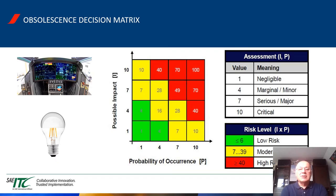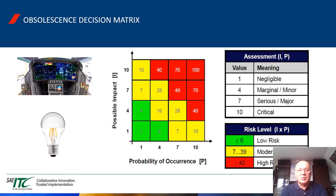In our discussions in Airing 662, we designed the obsolescence decision matrix. On the horizontal axis is probability of occurrence and on the vertical axis is possible impact. We designed three colors: green means low risk, yellow is moderate risk, and red is high risk.